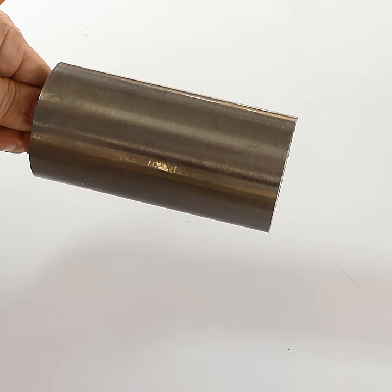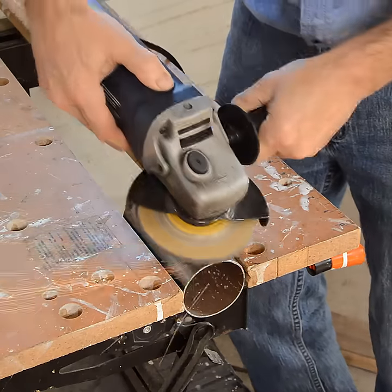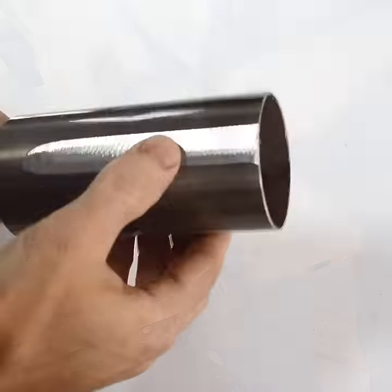I start with a piece of pipe to use as a bell, and then I ground 4 spots around the circumference a fair bit thinner.